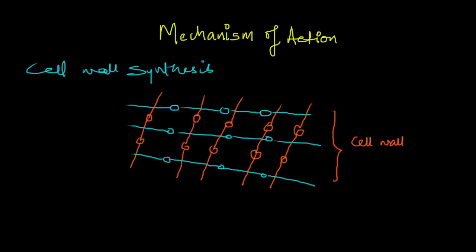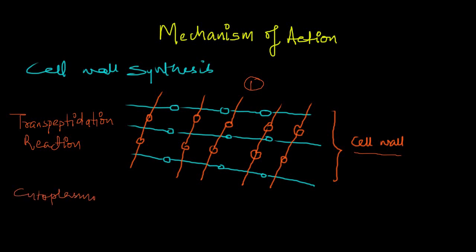The reaction by which polysaccharides and pentapeptides are cross-linked with each other is called the transpeptidation reaction. Via this transpeptidation reaction, these subunits are linked together and ultimately form the cell wall of the bacteria. There are cytoplasmic proteins which catalyze this transpeptidation reaction, and without these proteins, the transpeptidation reaction does not occur and cell wall synthesis will not take place.